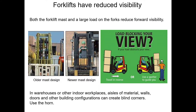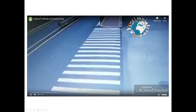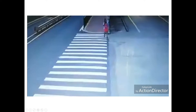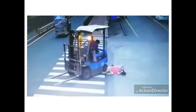Forklifts have reduced visibility — both the mast and a large load can block your forward view. Older designs had chains and columns spread out; newer designs consolidate them to the sides for better forward visibility, but blind spots remain significant. Always travel in reverse when a load blocks your view, use a spotter, drive slowly even without a load, and always use the horn. A pedestrian walking in line with a blind spot and the forklift operator cannot see each other until it's too late.